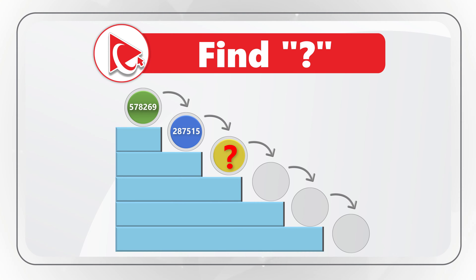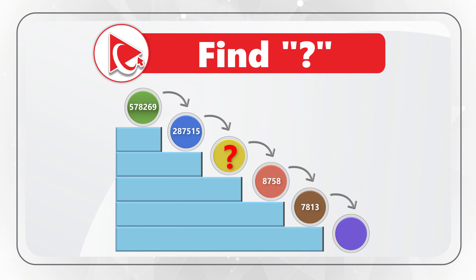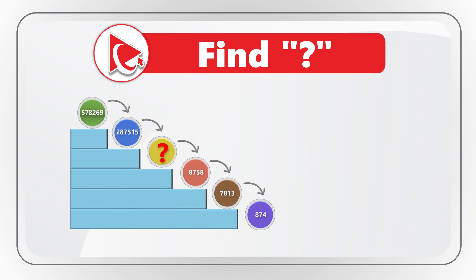Then it becomes the yellow ball with the missing number. As it continues, we see 8758 in the pink ball, then the brown ball with the numbers 7813, and as it continues to roll to the last step, it's a purple ball with the numbers 874 inside. We need to calculate the missing number and select from four possible choices.